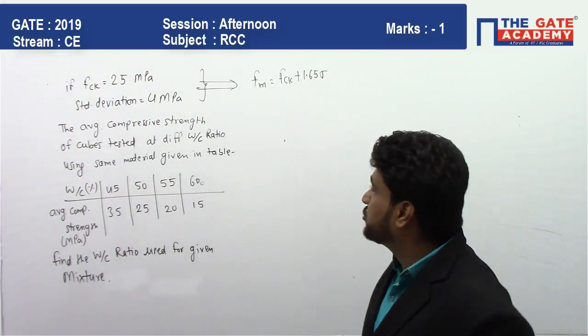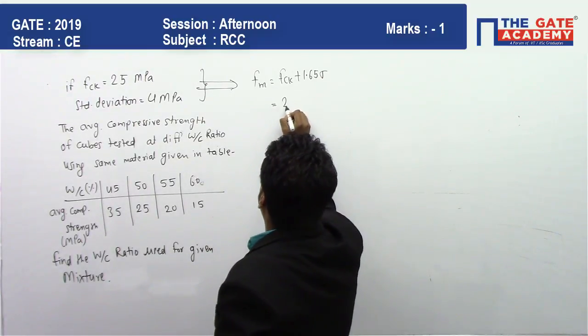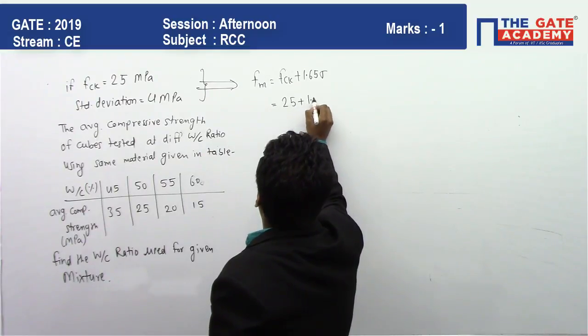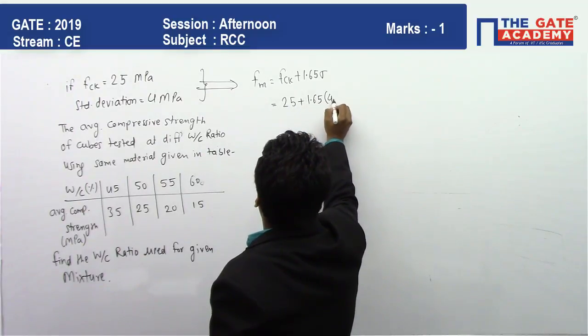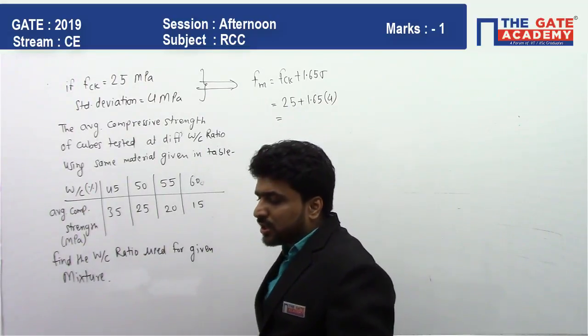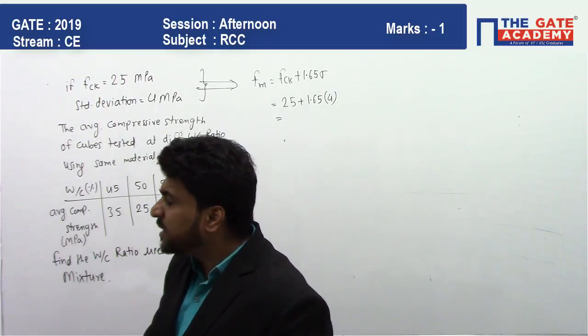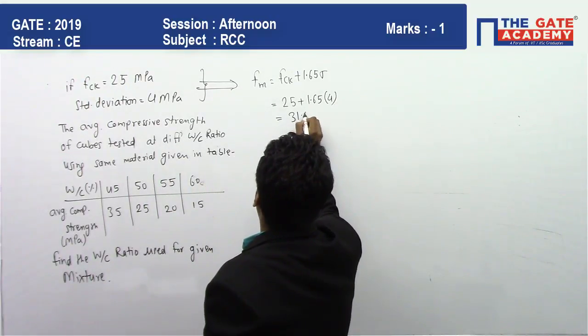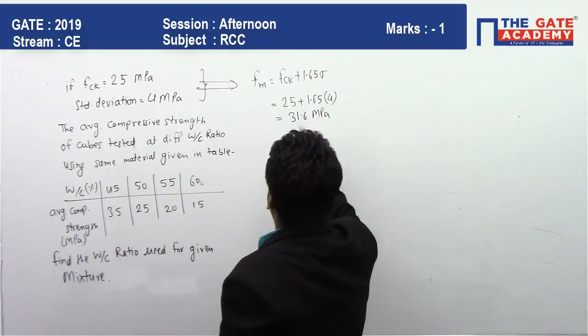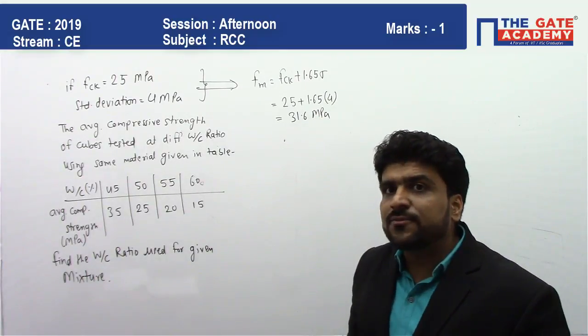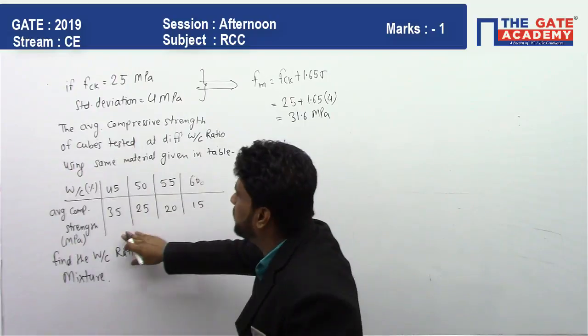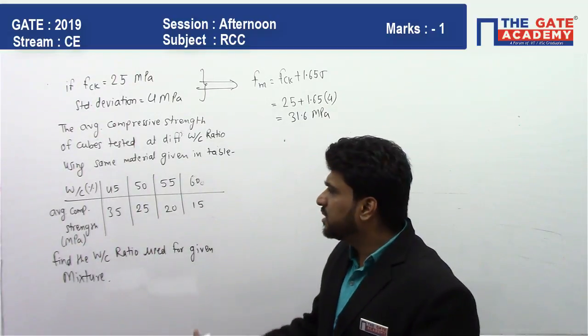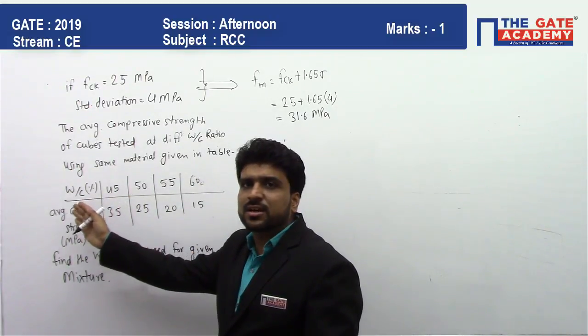So FCK is 25, 1.65, and Sigma is given as 4. So your mean strength will be 31.6 MPa. Now for 31.6 mean strength, what will be the water content? Simple. Now the table is given, you need to find the water content by doing the interpolation.